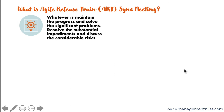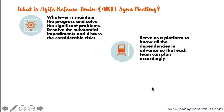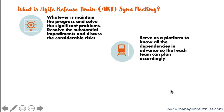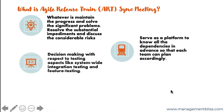Since a Release Train is required when there are multiple teams involved and all of them are working towards the same goal for the same clients, it becomes utterly essential for all the teams to know what is going on in each compartment. These Release Train meetings serve as a platform to know all the dependencies in advance so that each team can plan accordingly. Since most of the units are working in sprints, these synchronization meetings become an integral part to take decisions related to testing aspects like system-wide testing and feature testing.